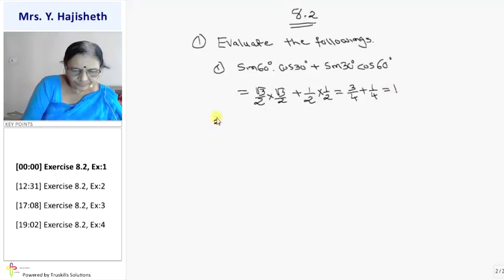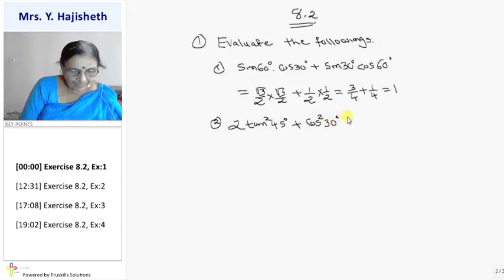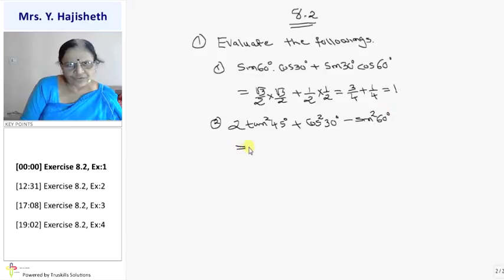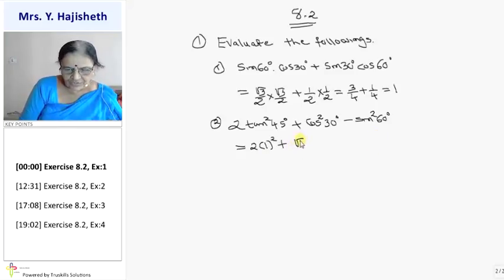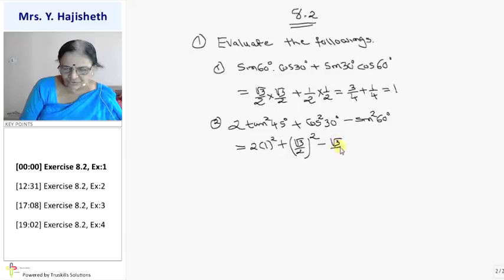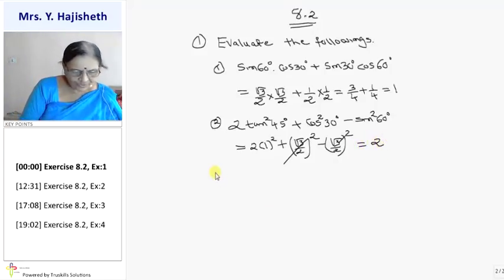Second sum: 2tan²45 + cos²30 - sin²60. Everybody knows tan45 is 1, so 2 into 1 squared is 2. Cos30 is sin60 and sin60 is root 3 by 2, so cos²30 is (root 3 by 2) whole square. Sin60 is again root 3 by 2, so it is (root 3 by 2) whole square. The plus and minus cancel out automatically. So my answer is 2.